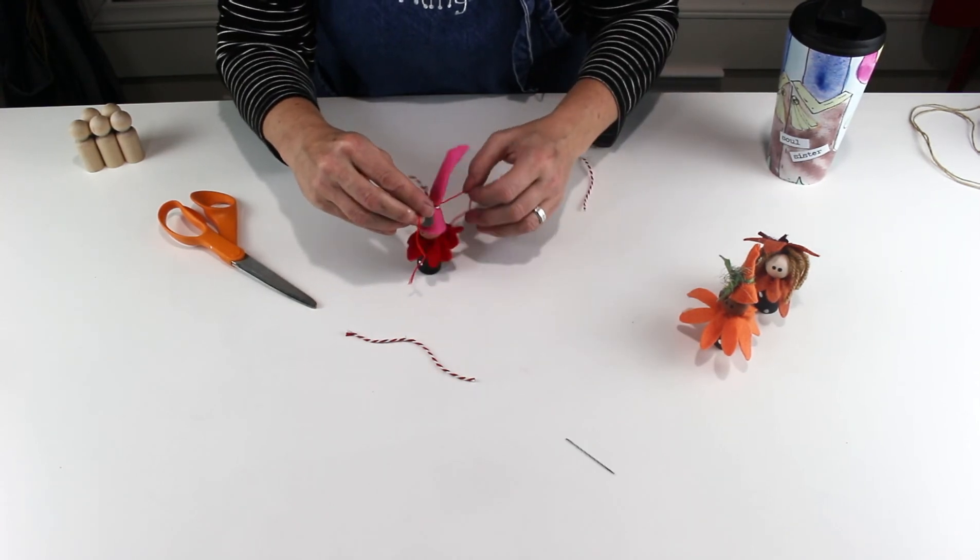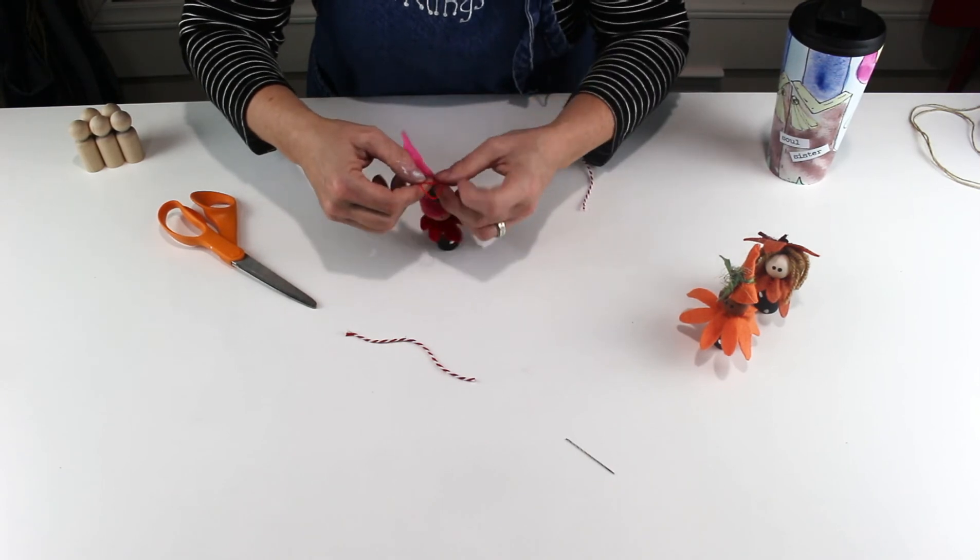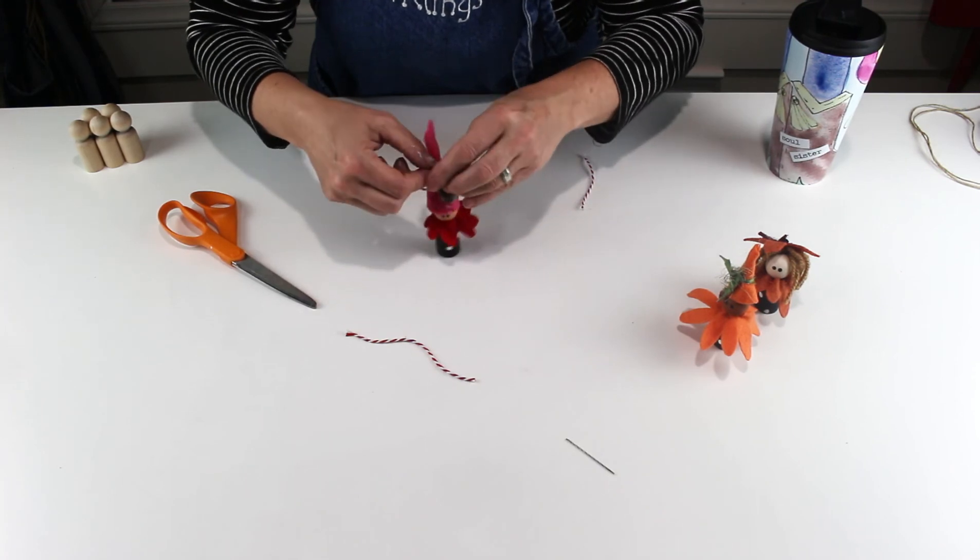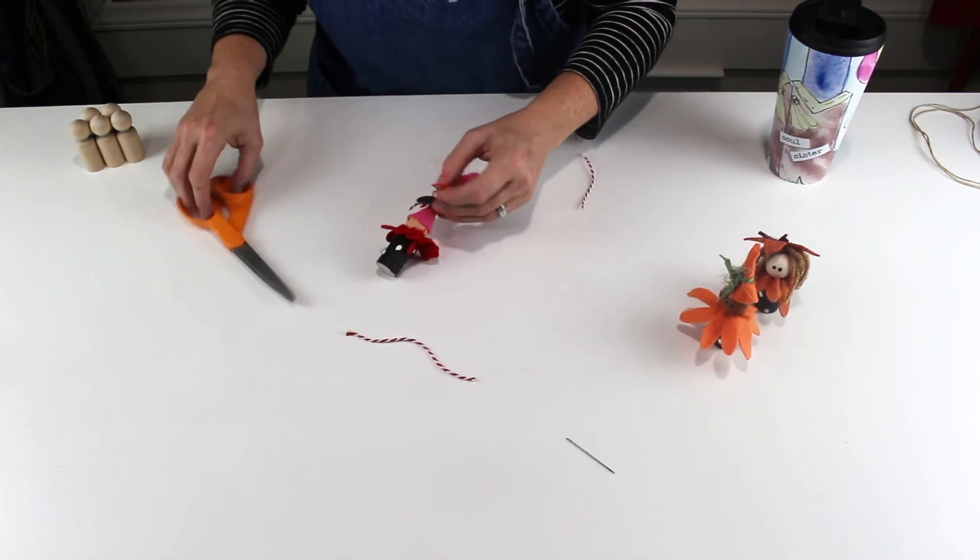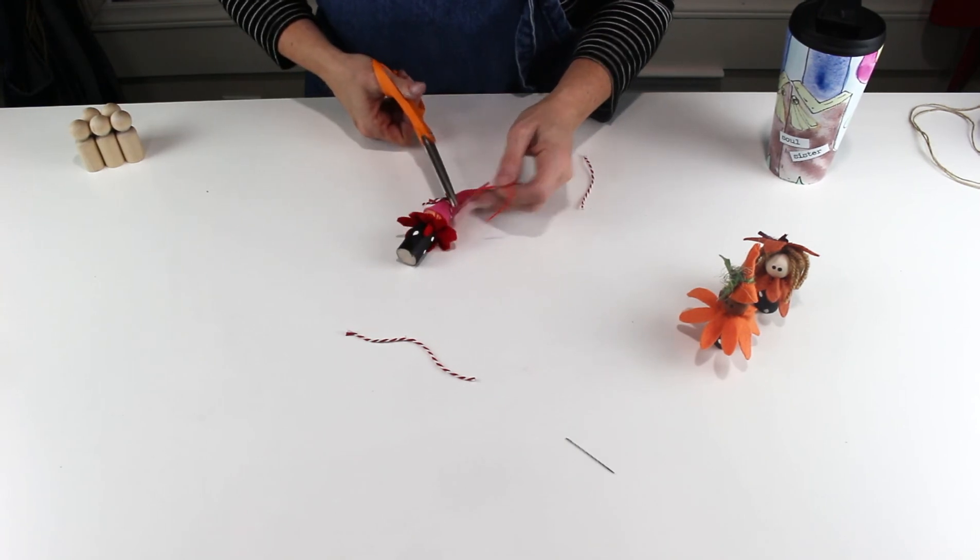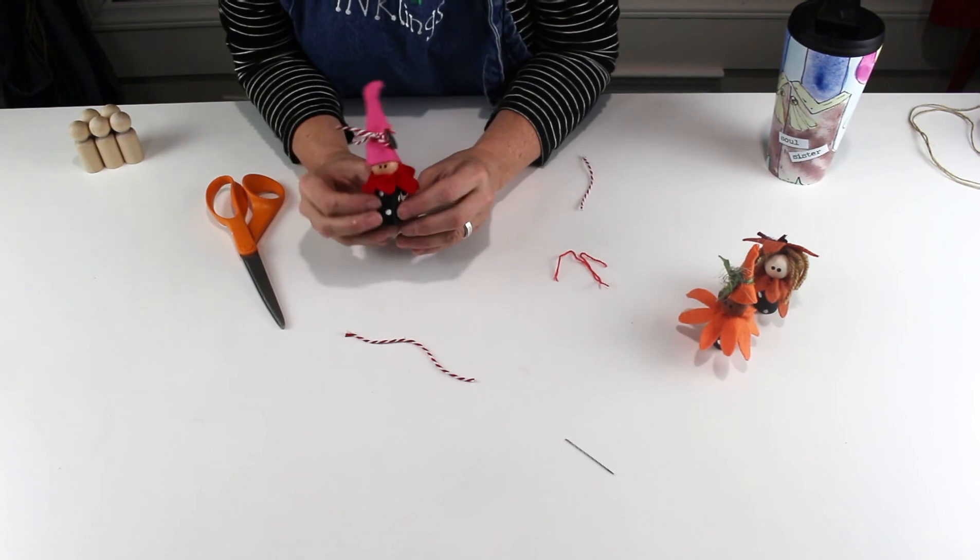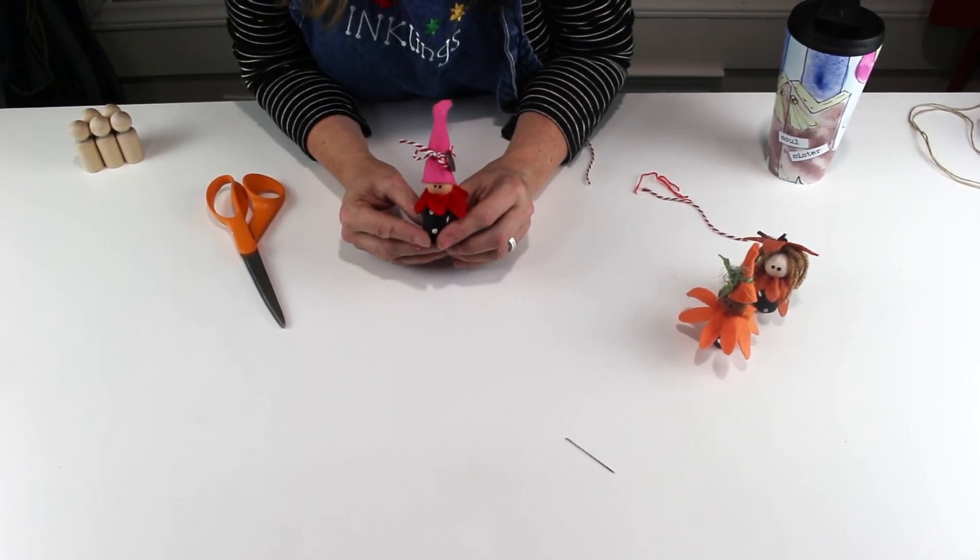I don't need the needle anymore. I just use that to make it easier than trying to thread it through the hole. I'm going to tie that on in a double knot, really tight, and then I'm going to trim off the extra string here so we don't need that. And there he is, a little gnome of love. So adorable. I love him. So cute.